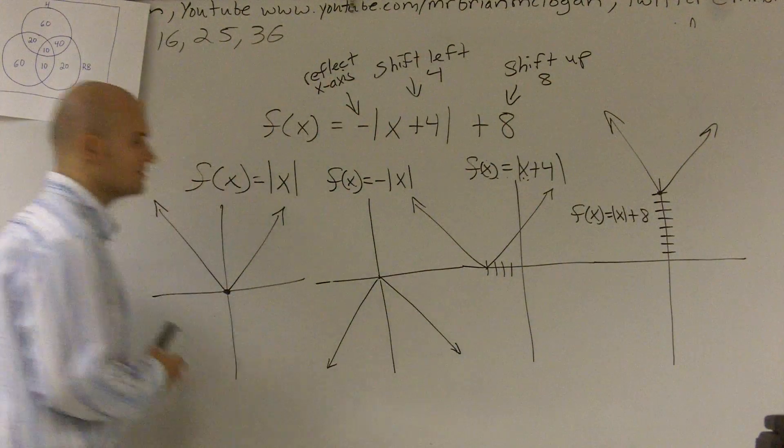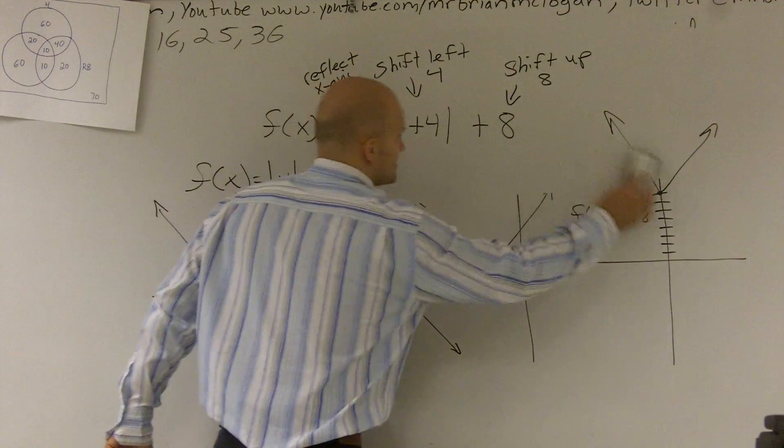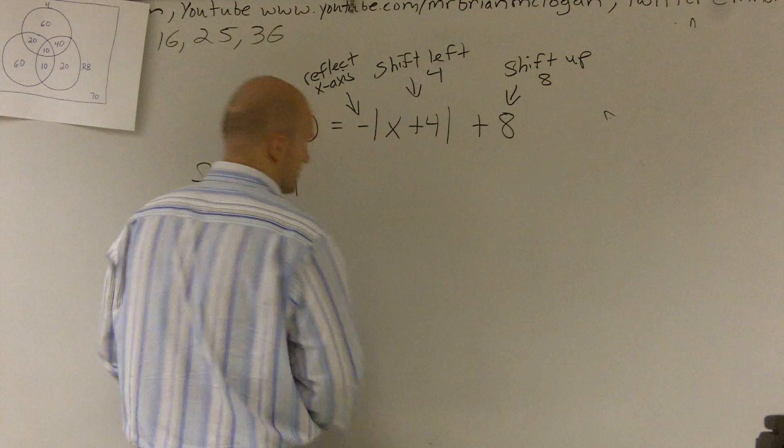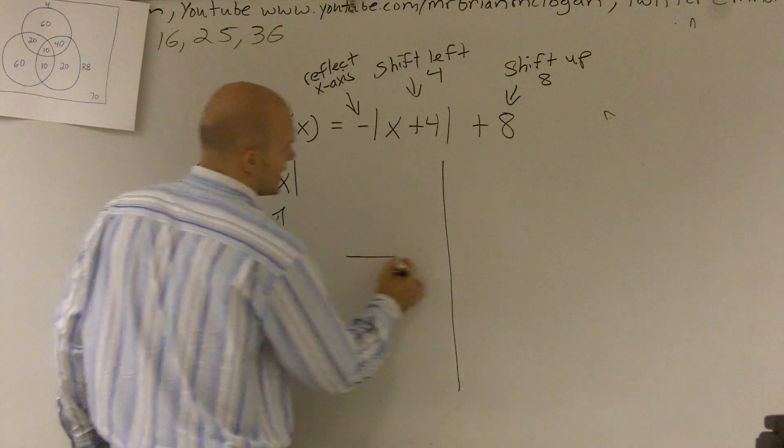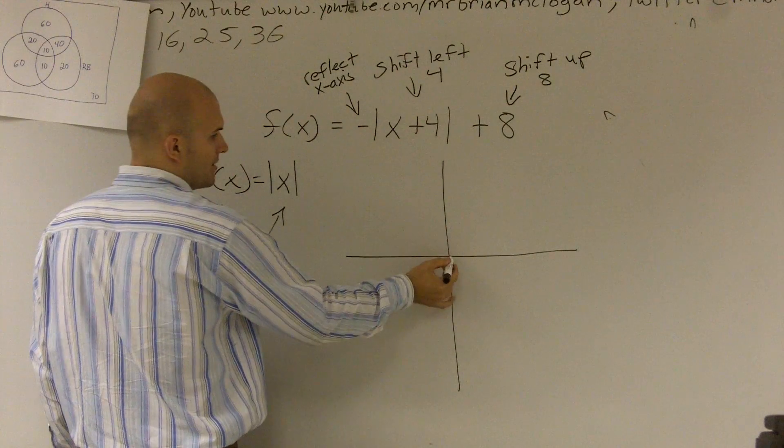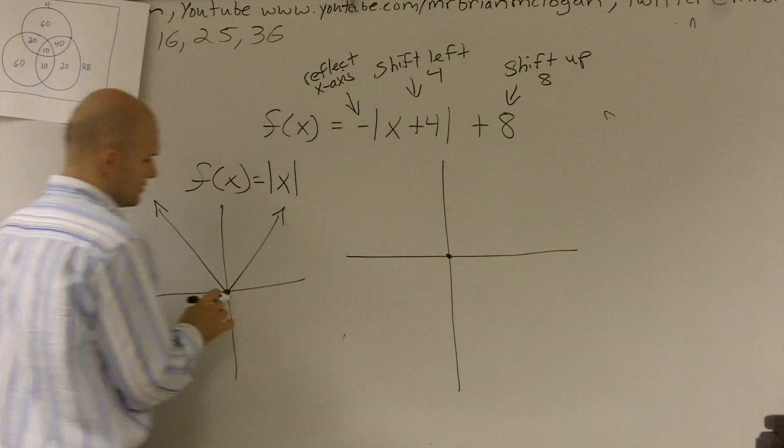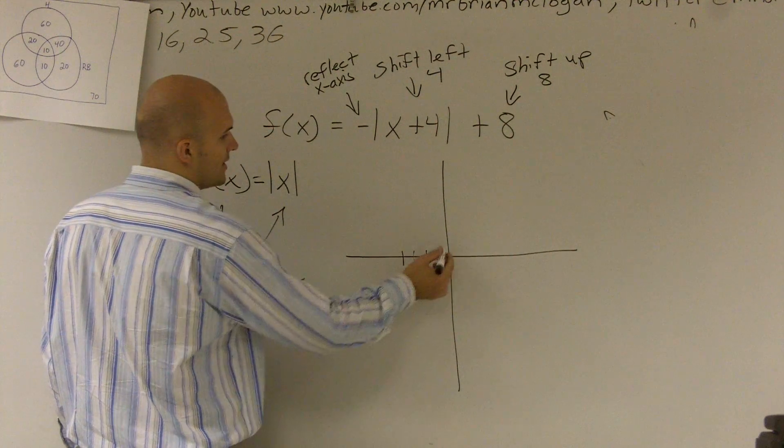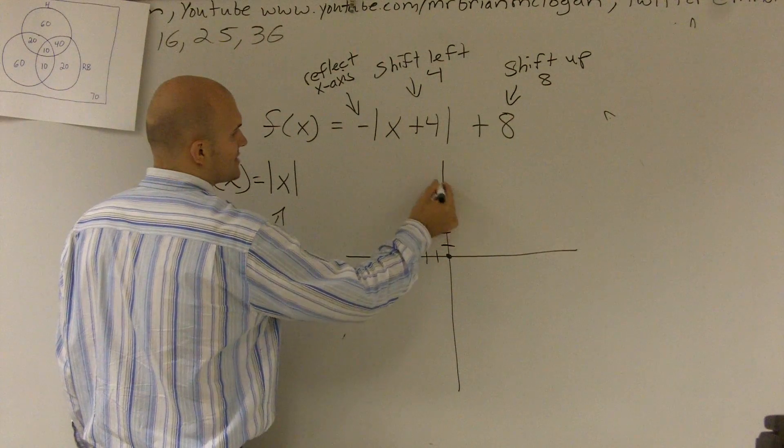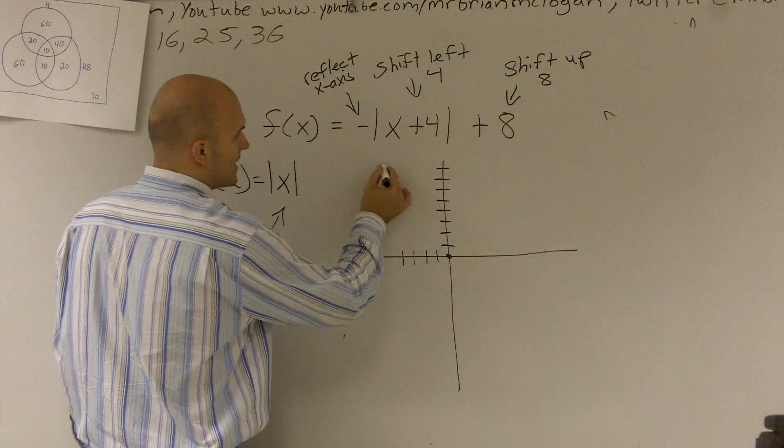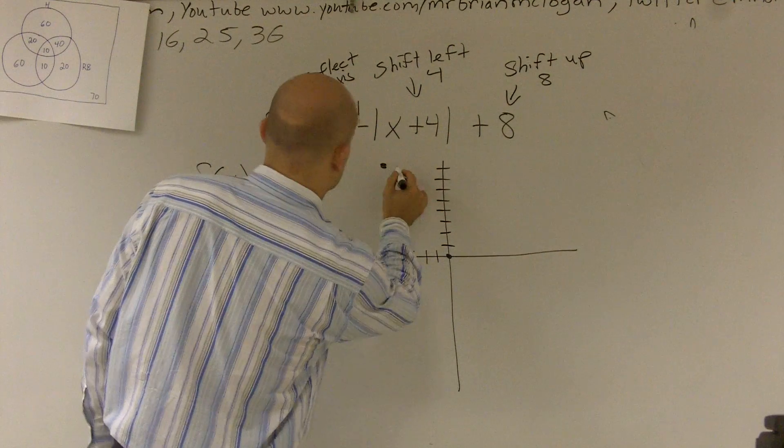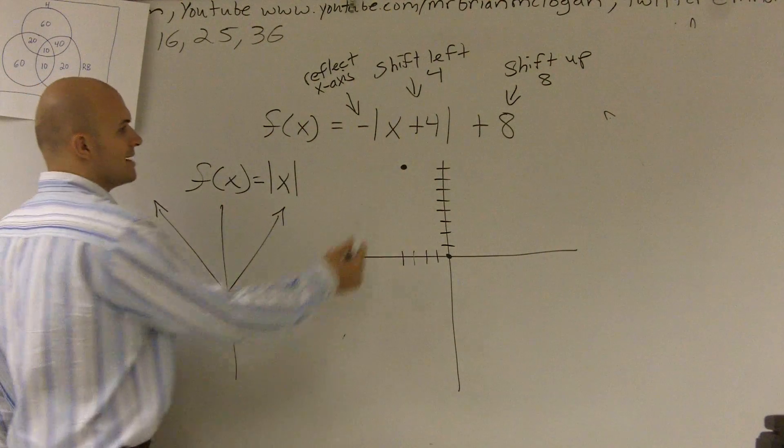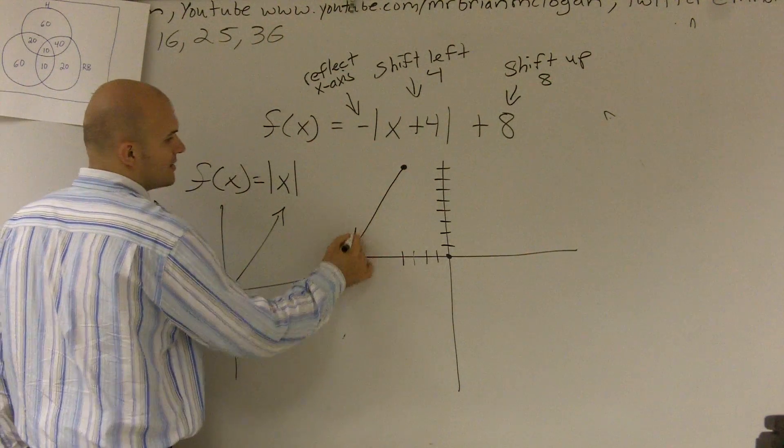So, why don't you guys take one last look at it? Because now, when I look at my graph, and once you get good at it, you can just say that, alright, I know that my parent graph crosses at 0, 0. Well now, I'm going to have to go to the left 4, 1, 2, 3, 4, and up 8, 1, 2, 3, 4, 5, 6, 7, 8. So, now, that turning point is right around there, and instead of opening up, my turning point, or my graph, is now going to open downward.